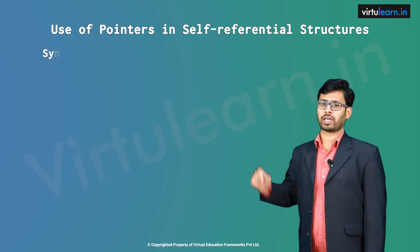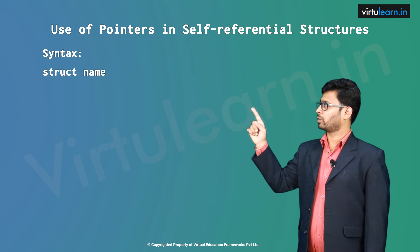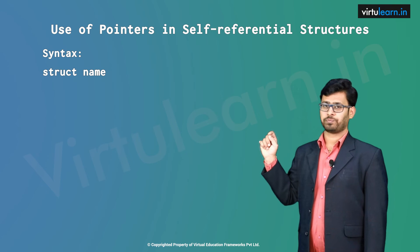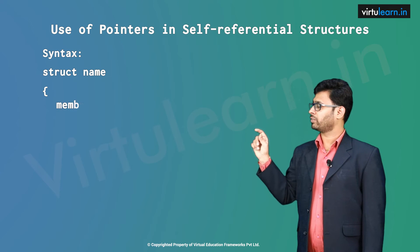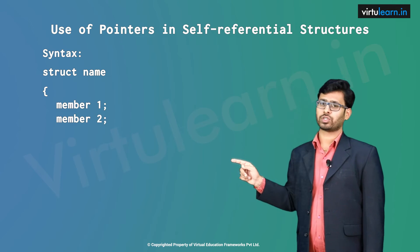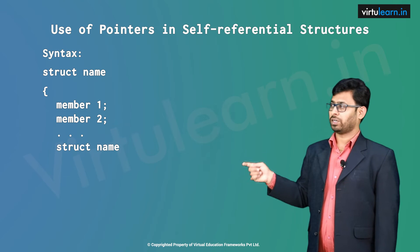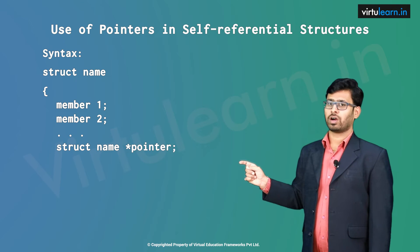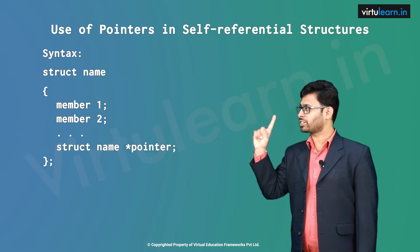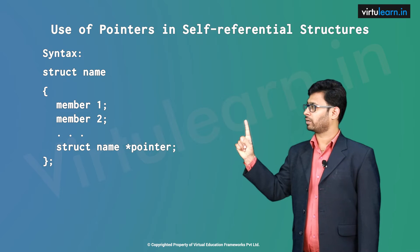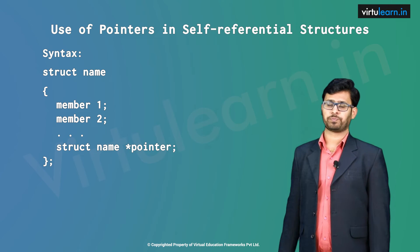Let us see the syntax. Struct followed by name, open the curly brace. The member list is member1, member2, and so on. But according to the definition, we should have at least one member which is pointing to the same structure type.